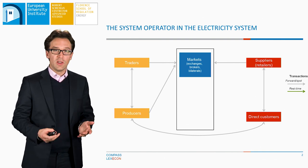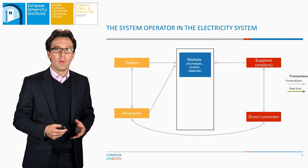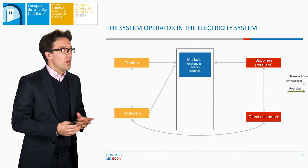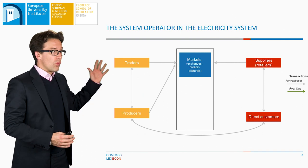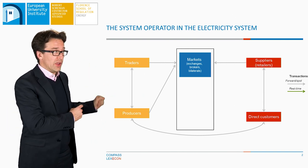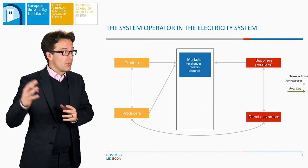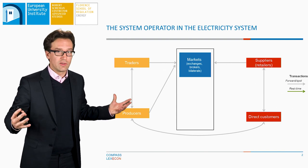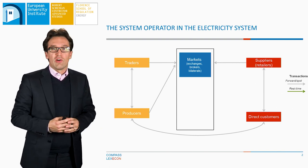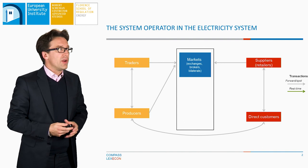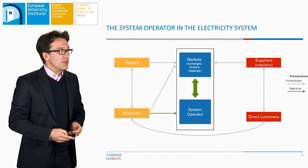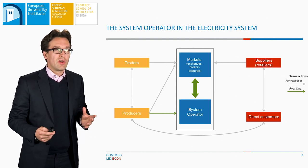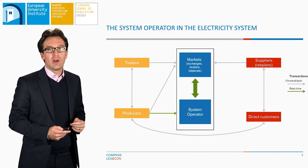If we now turn to what that means for the way we design power markets, we can first look at how a typical market for a typical good would be organized. We would have producers on one side, and on the other side downstream we would have suppliers and direct consumers of that good, and in between, of course, we would have the market, and possibly traders and speculators. With electricity, we have a need to ensure that the system will remain in balance in real time at every node, and we therefore need a system operator.